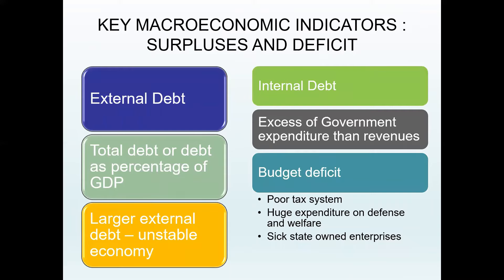Other indicators that depict surplus and deficit are external and internal debt. External debt is a country's total debt from commercial banks, government, or international financial institutions and corporations overseas. External debt as a percentage of GDP is the ratio between the debt a country owes and its GDP; higher external debt means an unstable economy. Internal debt is the total debt a government owes to lenders within the country. High internal debt indicates excessive government expenditure over revenues and is a reflection of a poor tax system, huge expenditure on defence and welfare, and inefficient state-owned enterprises.